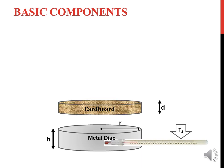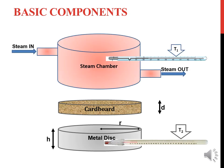Secondly, we have a cardboard. The thickness of the cardboard is small d and it has the radius r, same as that of the metal disc. This is next followed by a steam chamber where we have a provision for steam to escape and also a provision for steam to be sent in. The steam chamber is also provided with an opening for the thermometer T1, which is used to measure the steady state temperature of the steam chamber.